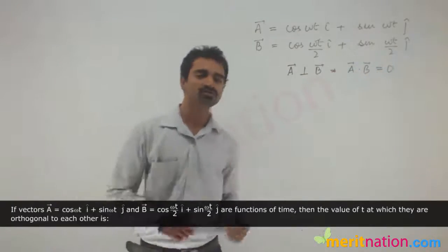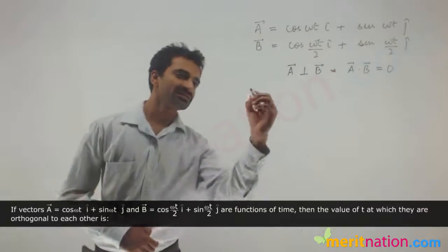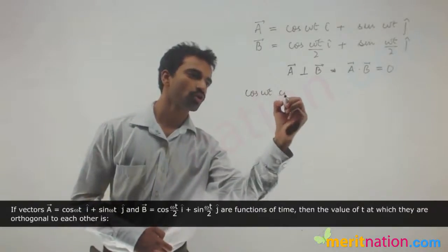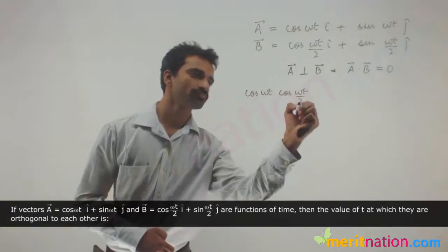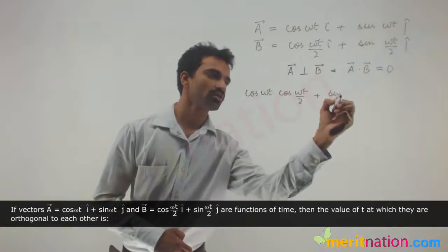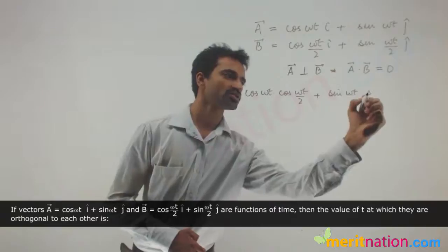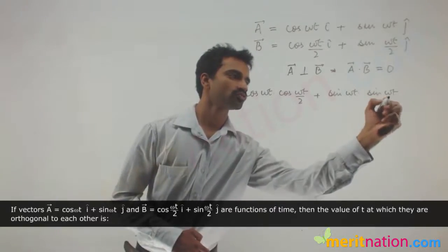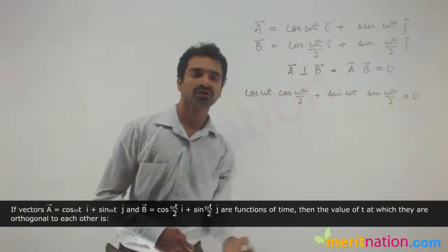Let's find out the dot product of these two functions. In this case I will just get cos ωt dot cos ωt by 2 plus sin ωt dot sin ωt by 2, and this is equal to 0.